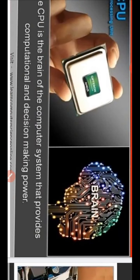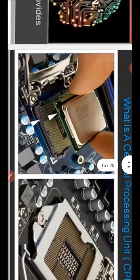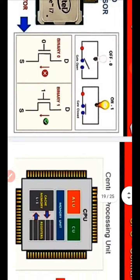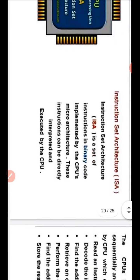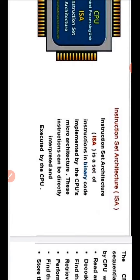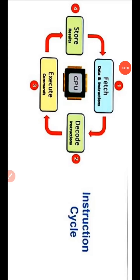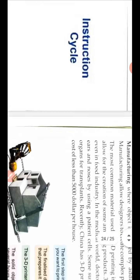The CPU is the brain of the computer system, providing computational and decision-making power. Instruction Set Architecture (ISA) is a set of instructions in binary code implemented by the CPU microarchitecture. These instructions can be directly interpreted and executed by the CPU. The instruction cycle of the CPU is: fetch, decode, execute, and store.